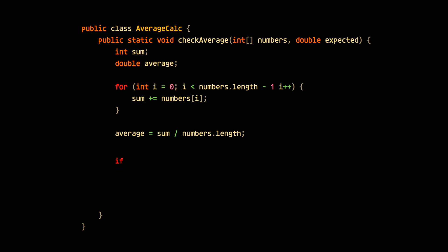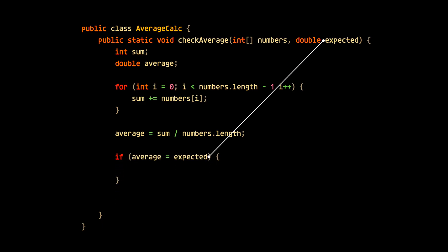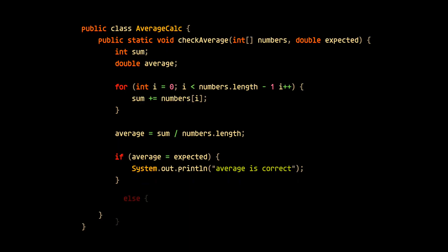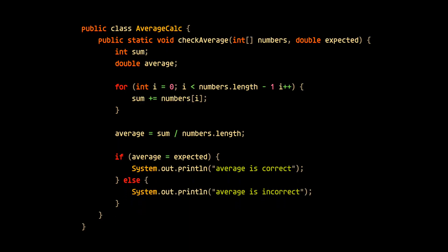If the average is as expected, we'll let the client know that the average is correct. If it is not as expected, we'll let the client know that the average is incorrect. So what we have here is a very simple and straightforward program with some very common beginner mistakes.